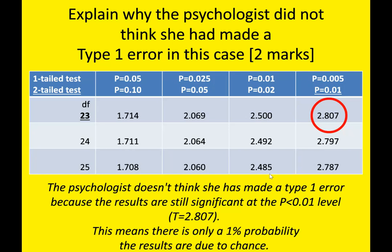You can add to that answer: 'This means there is only a one percent probability the results are due to chance.' So whenever you get the question 'explain why the psychologist did not think she made a Type 1 error,' it will always come after a question where results were significant. All it requires is going to the more stringent p < 0.01 level and checking whether results are still significant there. The answer will always follow a template — the only things that change are the critical values and the calculated values. Pause the video and write down that standard answer.